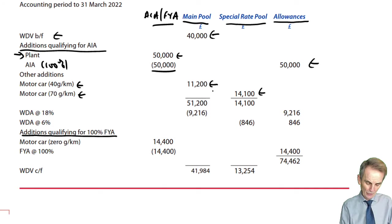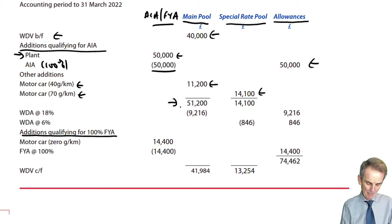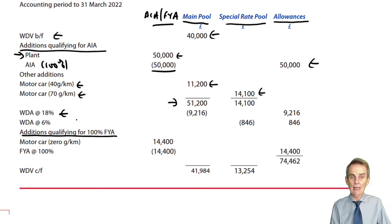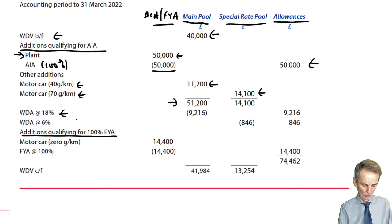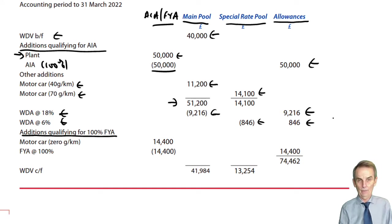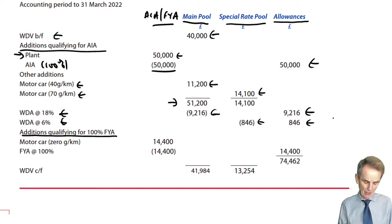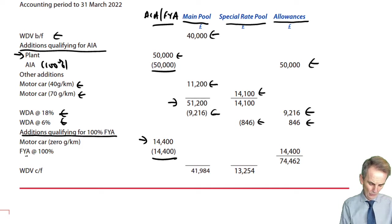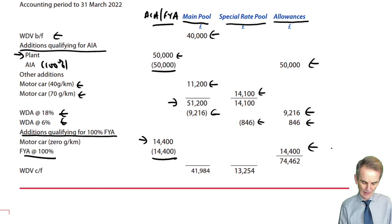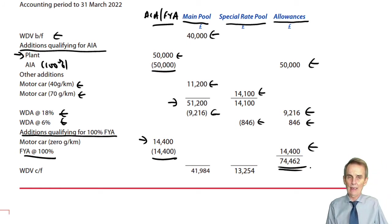We put the two cars with CO2 emissions into their relevant pool and update the balance on the main pool. The writing down allowance is 18% — the full 18% for a 12-month period — for the main pool, and 6% for the special rate pool. We deduct those two figures from the balance on each pool and allocate into the allowances column. Then we deal with the additions qualifying for 100% FYA — only those new electric cars with zero CO2 emissions. That costs £14,400, all of which is 100% FYA, and goes into the allowances available column. It doesn't impact the tax written down values of either pool.